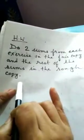Now, homework. Pay attention, children. Do two sums from each exercise in the fair copy. And the rest of the sums in the rough copy. Thank you, children.